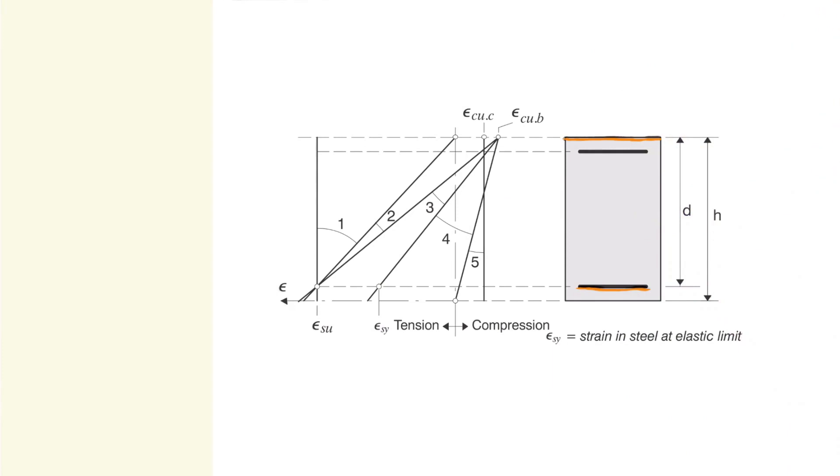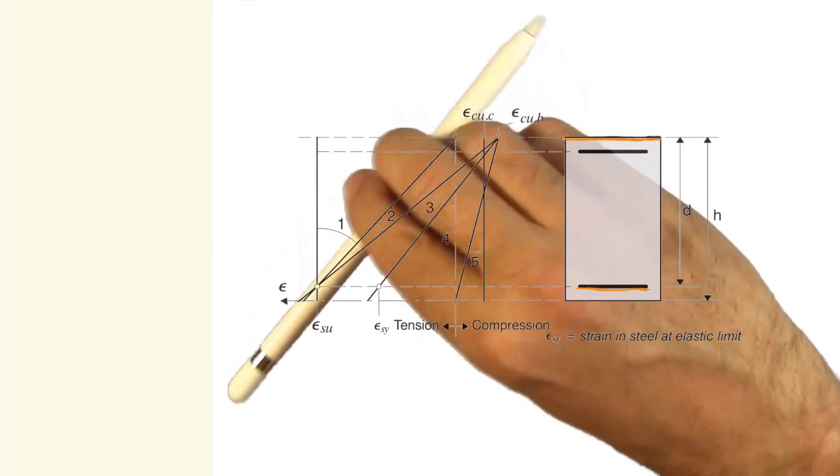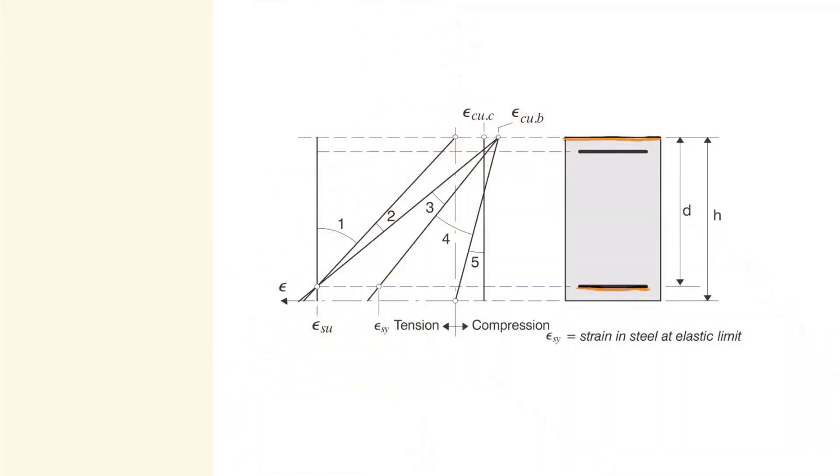In this pivot diagram, all possible limit strain lines for the cross-section are depicted, creating and showing several different domains.